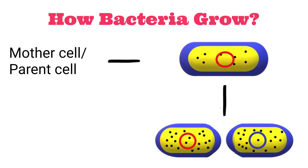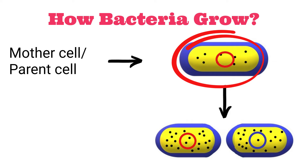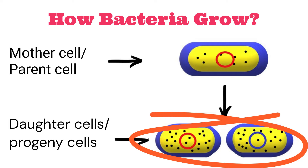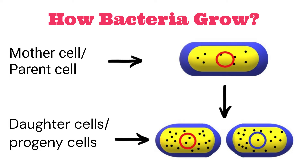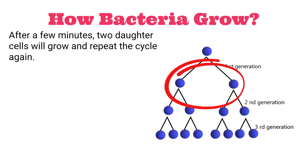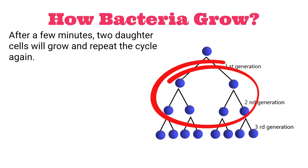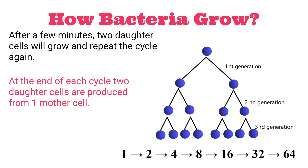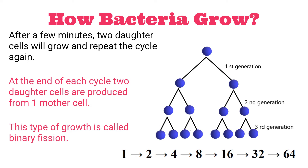The original cell is called the mother or parent cell, and the two resulting cells are called daughter cells. Why daughter cells? Because after a few minutes, the two daughter cells will grow and repeat this cycle again. So at the end of each generation, two daughter cells are produced from one mother cell, and for this reason this type of reproduction is called binary fission — binary means two, from one, two cells appear. In this way, the bacterial number increases exponentially, which is why this growth is called exponential growth.